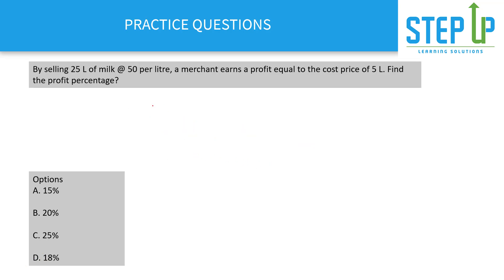Question: By selling 25 liters of milk at 50 per liter, a merchant earns a profit equal to the cost price of 5 liters. Find the profit percentage. Key insight: if we know the ratio SP/CP, our job is done. Profit equals selling price minus cost price, so here profit = 25·SP − 25·CP, which equals 5·CP.